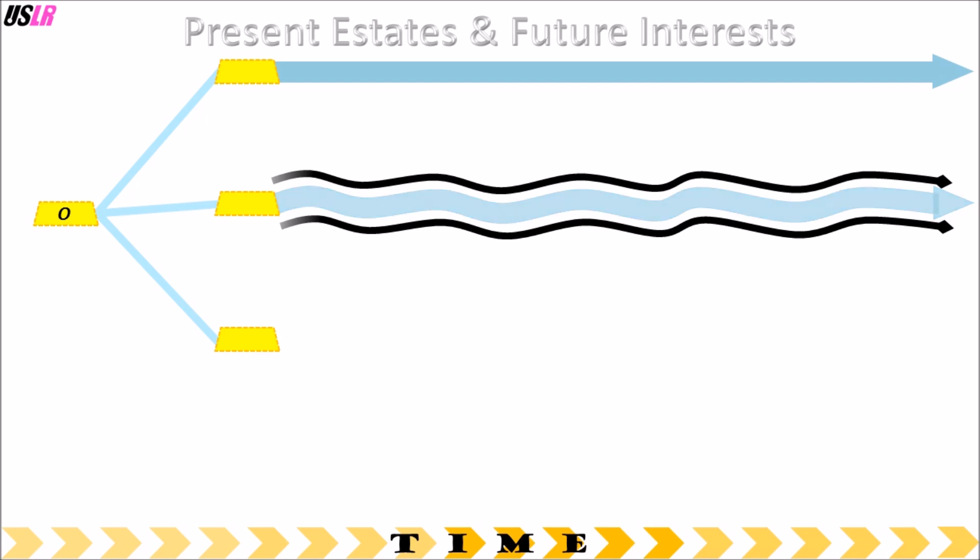Transferring land with a condition can have three variations. When the condition is met, the first variation will transfer the land back to O. The second variation might transfer the land back to O. It depends on if O chooses to take back the land. The third variation will transfer the land to someone else.